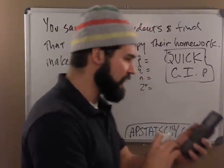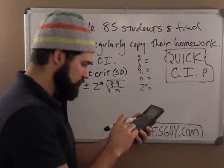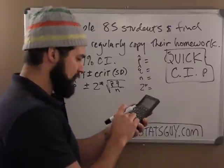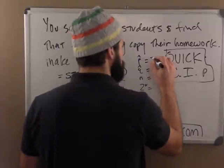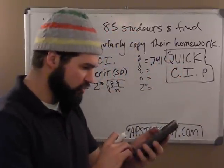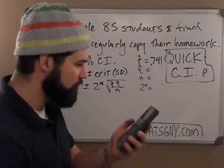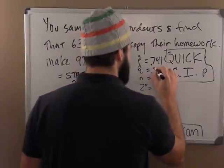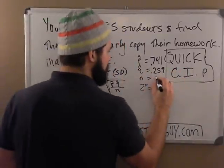So let's find the P hat. Well, the P hat is the successes in my sample, which is 63 divided by 85, and in this case it's .741. That's my P hat. My Q hat is just one minus that, which is .2588 or .259. N is my sample size, which is 85.